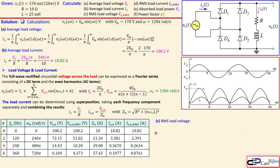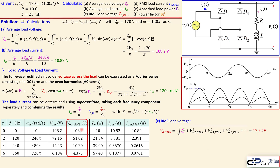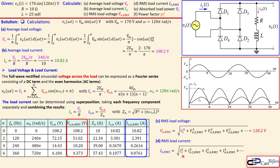Now we have all the components for our load voltage and load current. The RMS load voltage is calculated using the formula: square root of (Vo_avg² plus the sum of each harmonic's RMS amplitude squared). I stopped at N=6 because beyond N=8 the contributions become very small. Similarly, the RMS load current is the square root of (Io_avg² plus all harmonic RMS values squared), which gives us 11.09 amps.